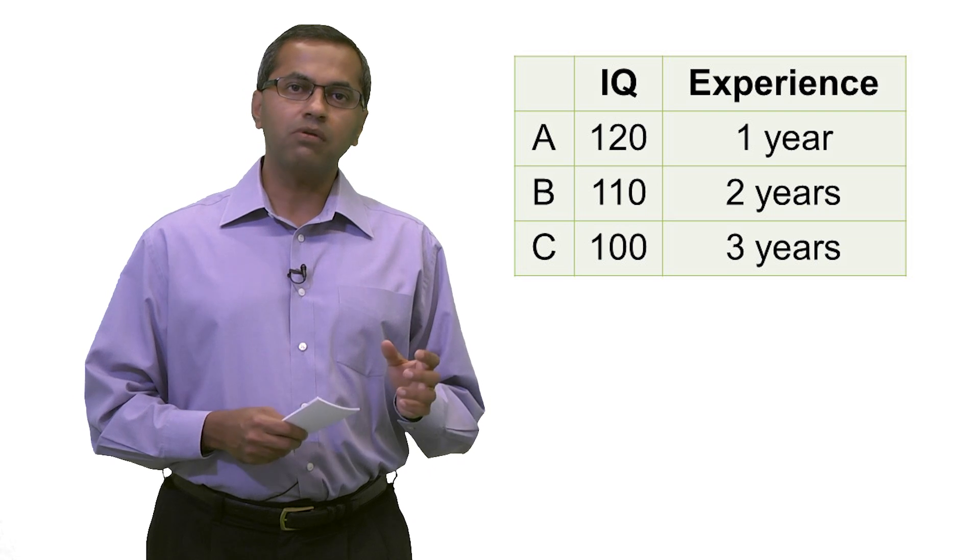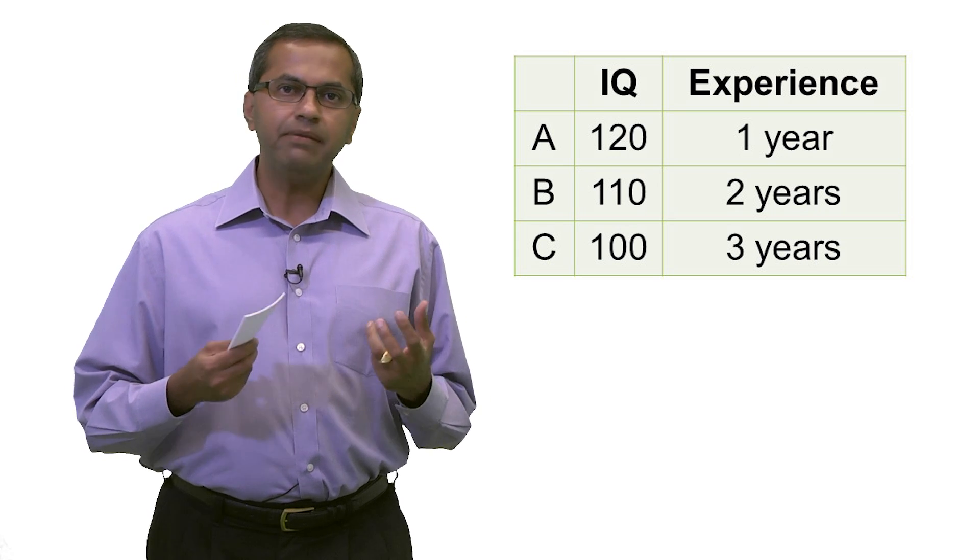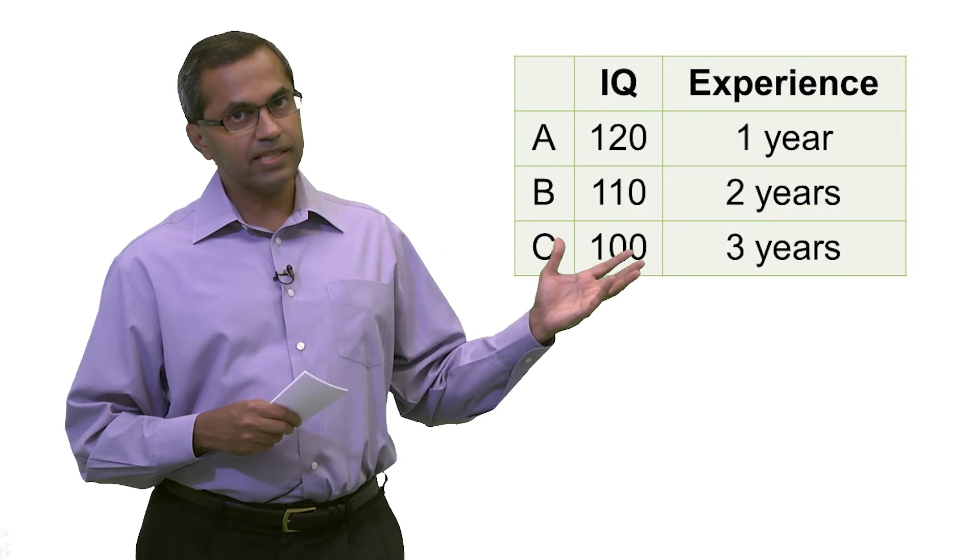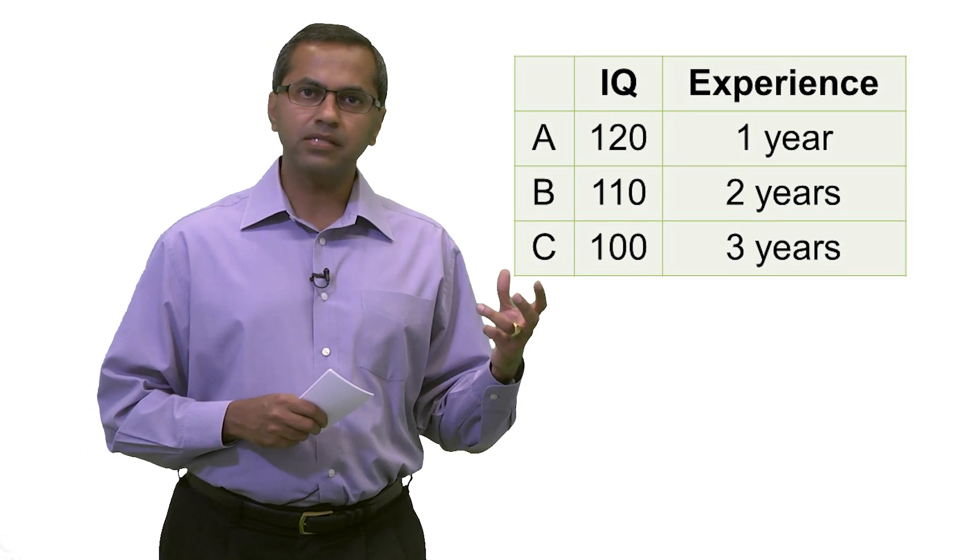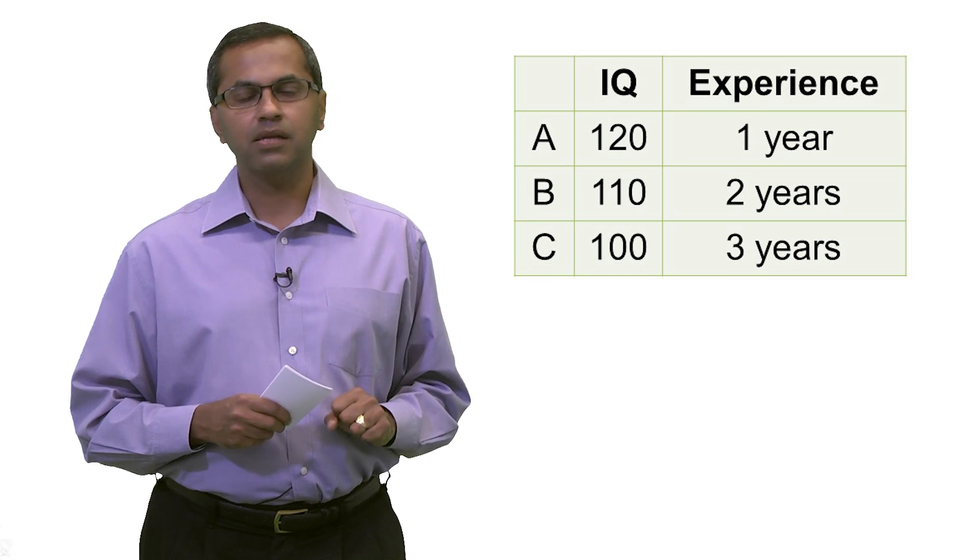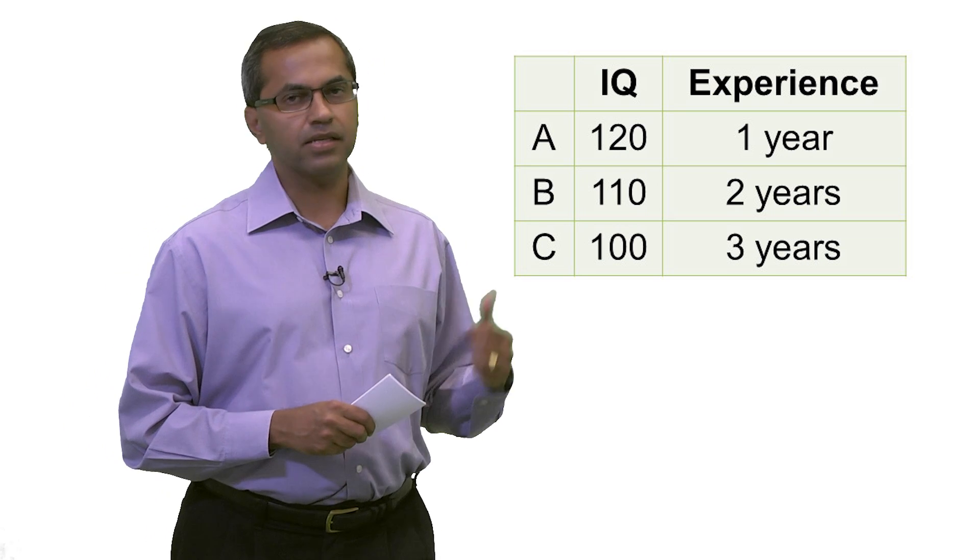In other words, a score which is different by 10 points from each other might not really mean that one person is actually smarter than the other one. So if I look at these data, 120 is about the same as 110, 110 is about the same as 100.